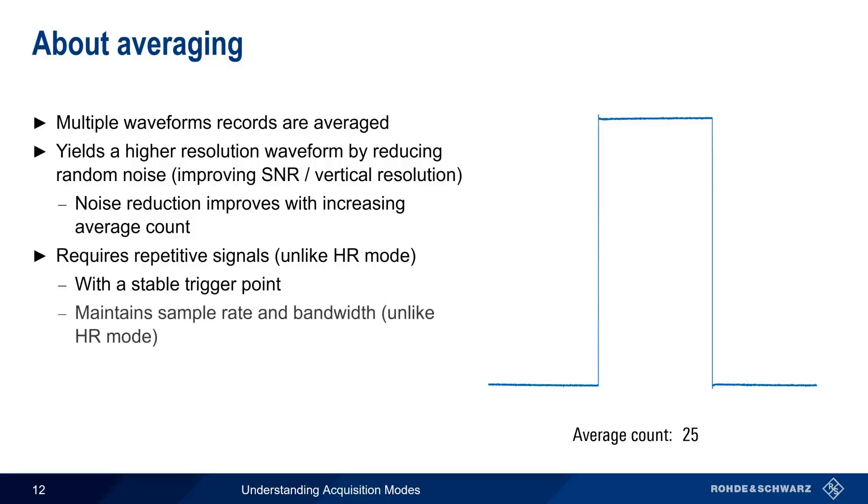Averaging is also unlike high-resolution mode in that there is no reduction in bandwidth or sample rate. And finally, note that the scope's triggering system can take advantage of this noise reduction because averaging only occurs after acquisition.